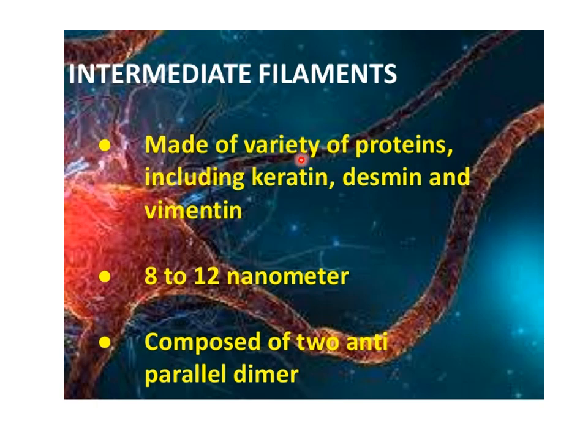The intermediate filaments are not made up of a single protein. They are made up of various proteins that include keratin, desmin, and vimentin. All these types of proteins may not be present in a single cell; they are present according to the need and requirement of the cell where it is located. The intermediate filament is composed of two anti-parallel dimers of any type of these proteins.